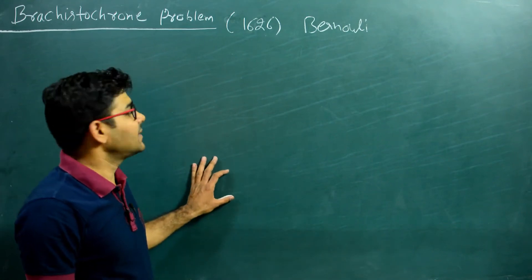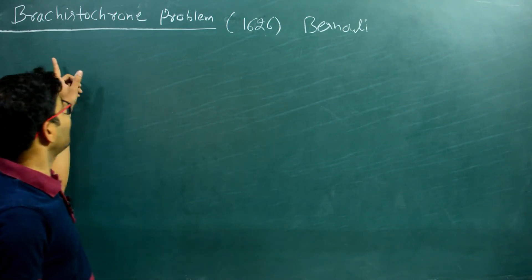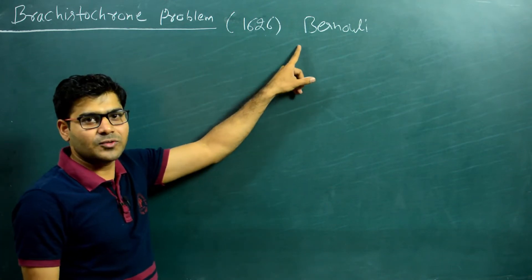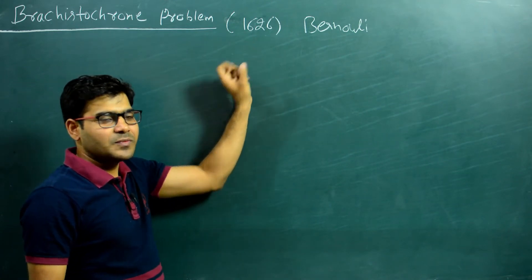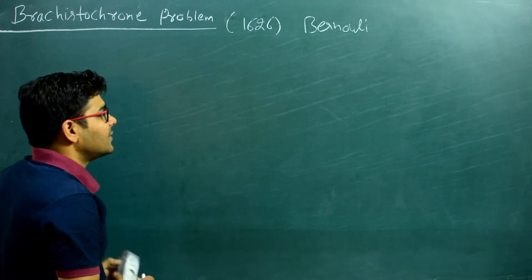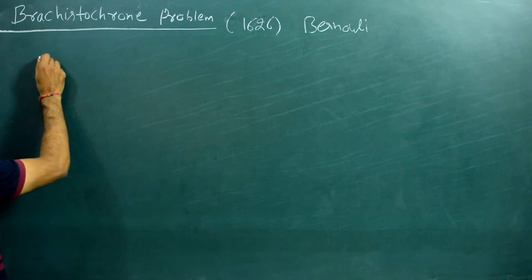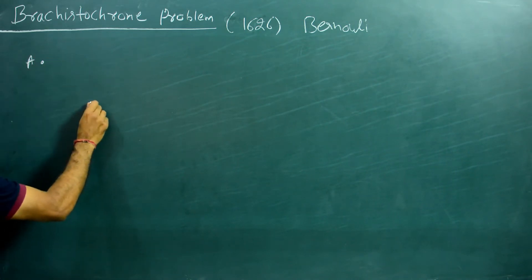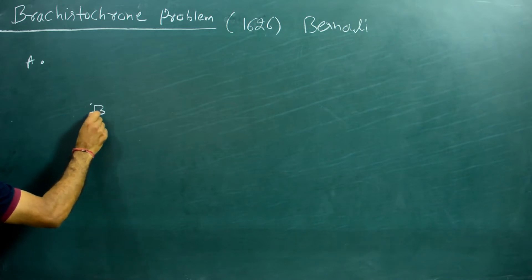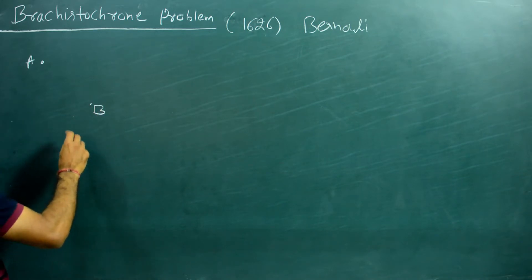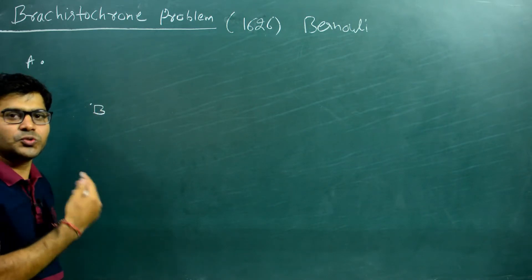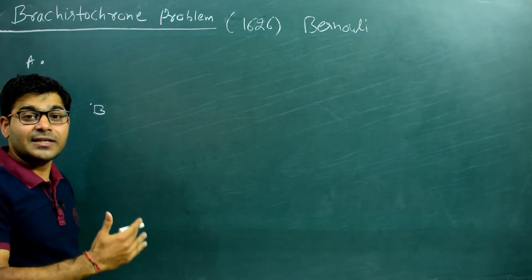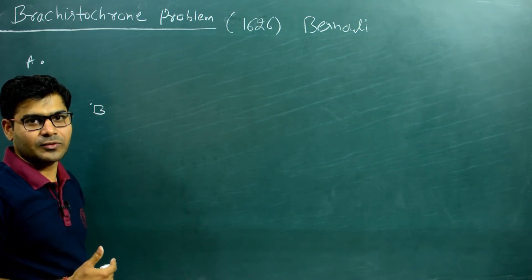Hello. Today we will discuss a problem called the Brachistochrone problem, which was given by Bernoulli in 1626, which says that if a particle of mass m goes from point A to point B under the influence of gravity, which path should this particle choose in coming from A to B so that it takes minimum time in reaching point B.